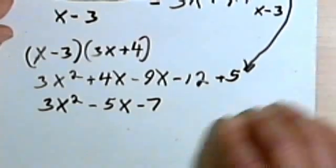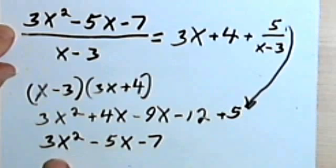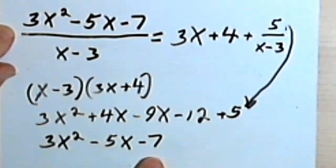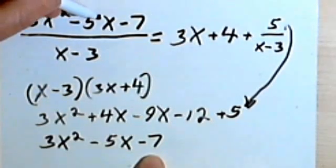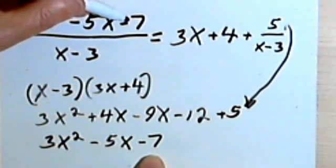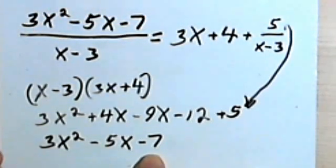And if everything was right, then this product here, 3x squared minus 5x minus 7, will be the same as my original numerator, 3x squared minus 5x minus 7. So that's a way to know that this answer is the correct answer.